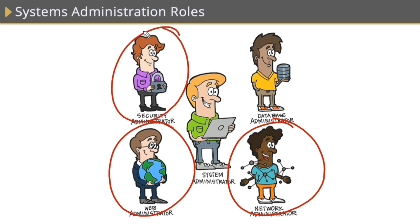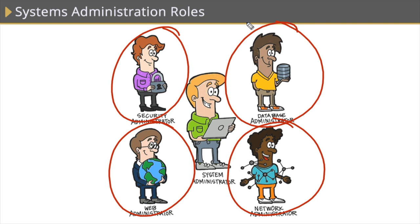We also have security administrators, responsible for securing our systems and our network. They're also responsible for firewalls — both hardware firewalls living on our network and outside of it, as well as software firewalls living on our machines themselves. Think of these guys as traffic cops sitting on our network, punching holes in our firewalls to allow applications to access certain services. Another very important role is the database administrator, responsible for our database servers and the databases living on them. Databases are used by applications to read and write data, so these folks ensure the integrity and efficiency of that data.